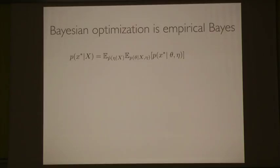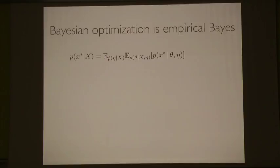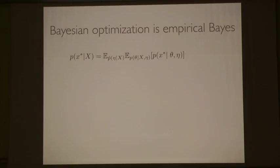One thing that may not be obvious is that Bayesian optimization is an empirical Bayes procedure. To see that, look at these expectations. To predict new data x-star conditioned on training data x, we take an average of predictive densities over draws from the posterior. This posterior is expensive to obtain and is conditioned on hyperparameters. Empirical Bayes says: let's take the mode of the posterior hyperparameters conditioned on data. It's unusual in the sense that it uses the data twice — to get a posterior of the hyperparameters and also to get a posterior of the latents.